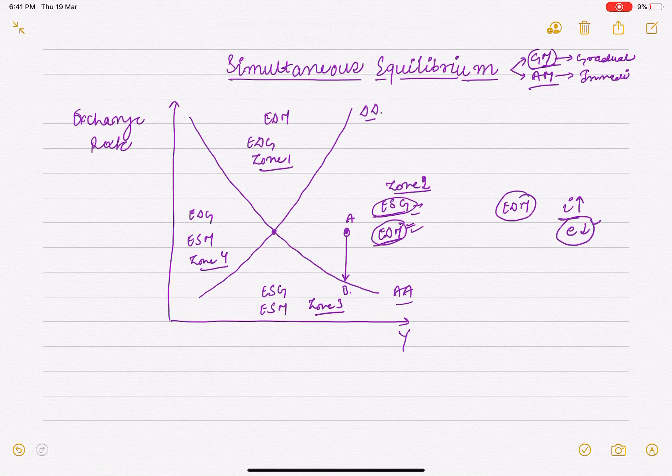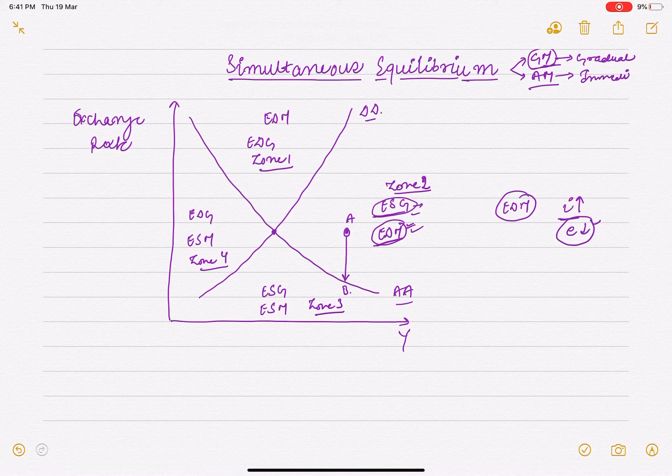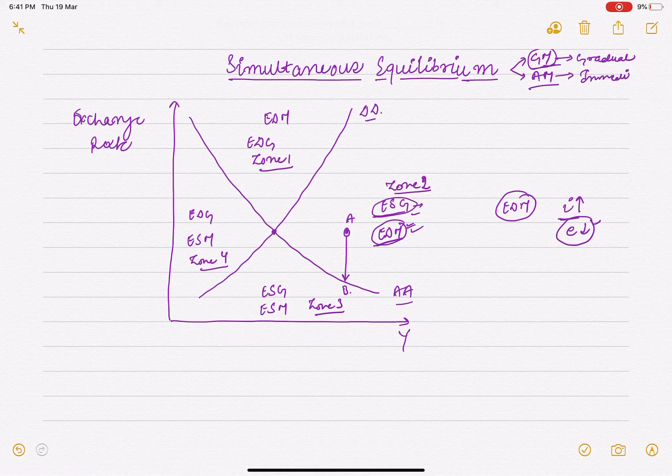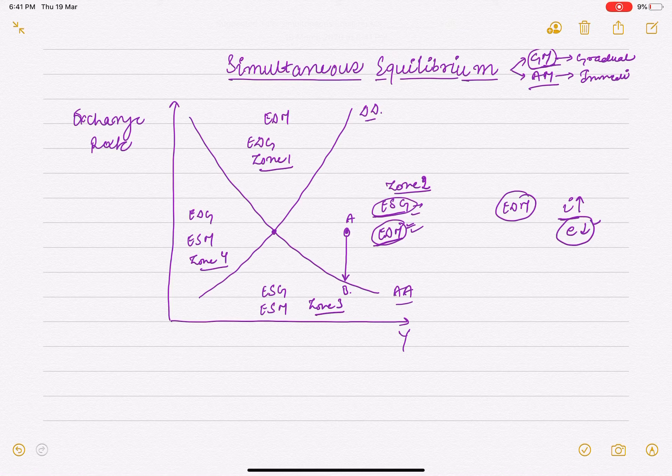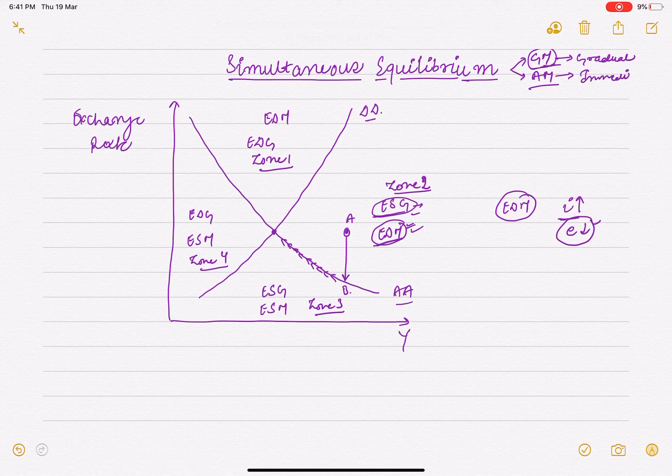With excess supply of goods, unplanned inventory investment increases - there is more inventory. So in the next period, the firm will produce less. The economy, moving along the AA curve, will see output reduce, and as a result both goods market and money market reach equilibrium simultaneously.